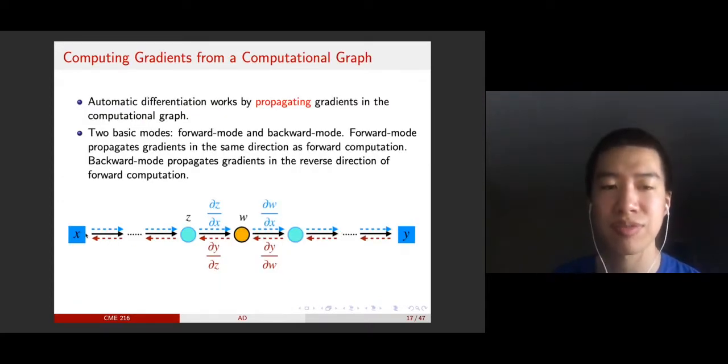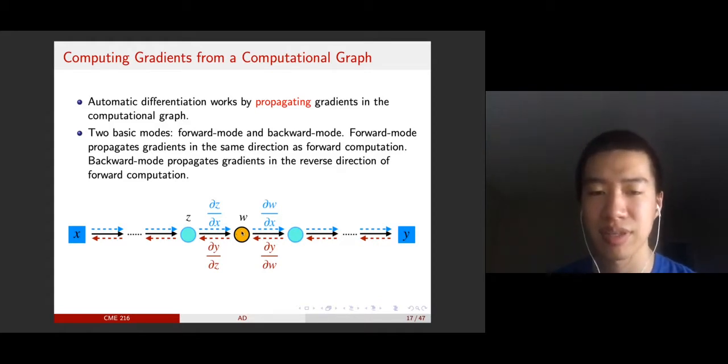There are two modes. The first mode is to propagate the gradients forward. Let's consider a specific node, this orange node here. The orange node outputs W. W is not the node because, as we said, the node is a function. W is actually the output of this node. We also have Z, and Z is the output of this node. In the forward mode, you propagate the gradients forward. That means assume that you already know the gradients of Z with respect to your primitive variable.